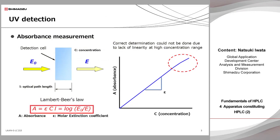When a compound absorbs light energy at a particular wavelength in the UV visible region, the energy of electrons rises from the ground state to the excited state. This is UV absorption. The absorbance detector measures the intensity difference of the incident UV light to the flow cell and the transmitted UV light from the flow cell, which means UV absorption. The detection principle of the UV detector is explained in this slide.